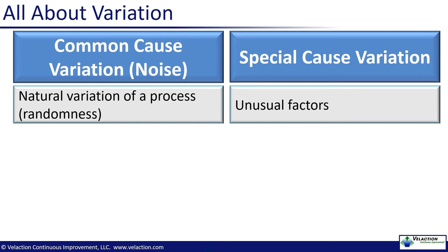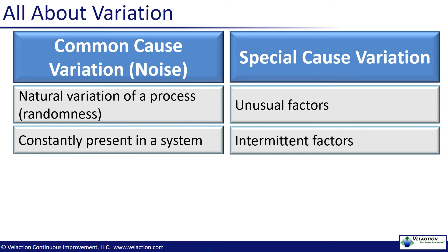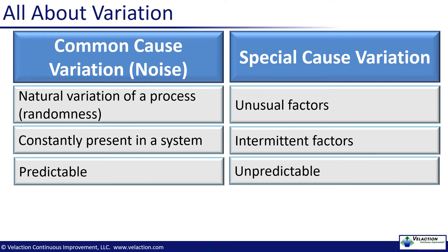In your systems, though, that special cause might not be so easily identifiable. Another distinguishing factor is when the cause is present. Common cause is always there — the small variation is a constant presence. Special causes don't happen all the time; they come and go. Common causes are also more predictable than special causes, at least mathematically. That doesn't mean that you can't see a special cause in advance — it just means the data points don't fit the pattern.